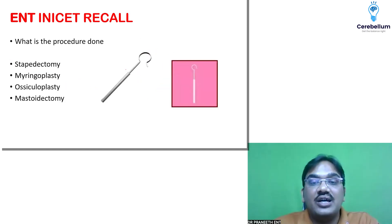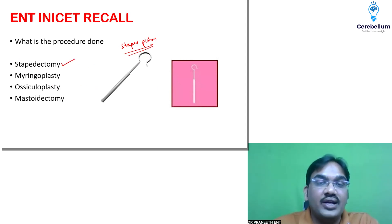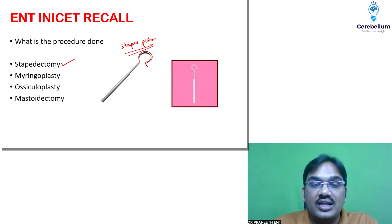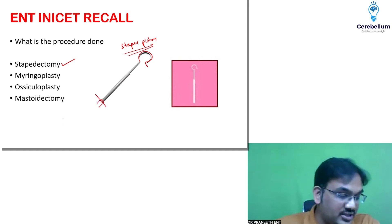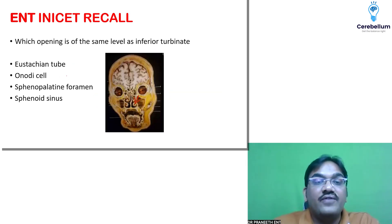What is the procedure shown? This is a stapes piston. The stapes piston is inserted during stapedectomy. The head of the piston is crimped onto the long process of the incus, and the base enters through the footplate into the inner side.